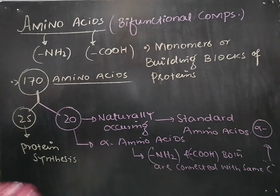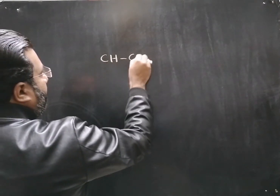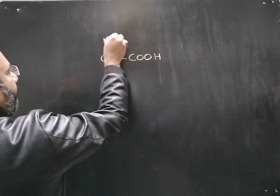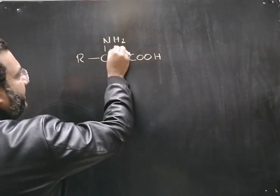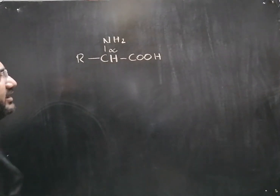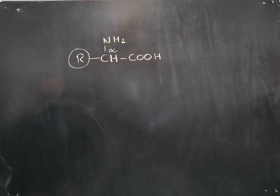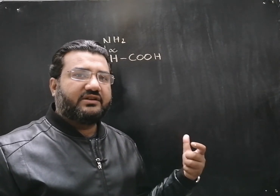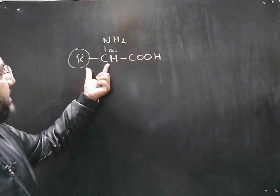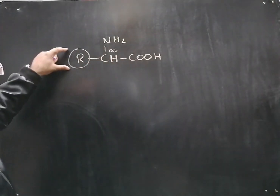Let us look at the general structure of these amino acid molecules. In an amino acid molecule, the alpha carbon has both the basic amino group and the acidic carboxyl group attached to it. Amino acids differ from each other on the basis of the R group. When the R group is changed, the nature and structure of the amino acid also changes, while the rest of the molecule is retained in almost all amino acids.